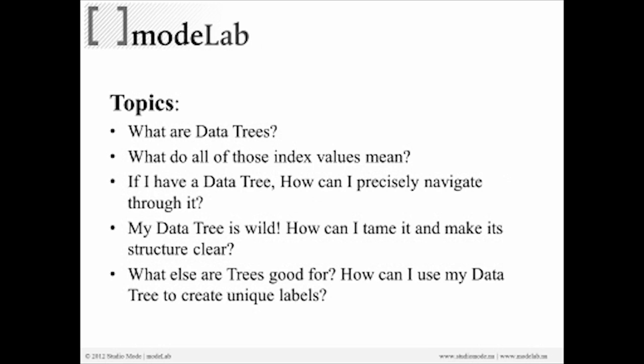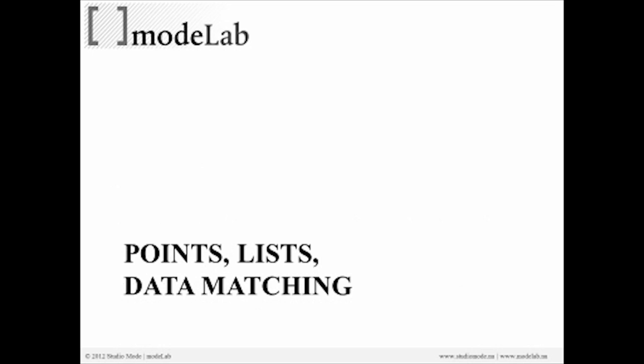The things we're going to go over today are: what are data trees, what are all of the index values that go into a data tree, how can you precisely navigate through it, how might we tame a wild data tree and make its structure clear, and what else are data trees good for — such as how you can use them to create unique labels. We're going to use points today as a way to review all of the content related to data trees, because they're simple and an easy way to describe how something is structured relative to a position in space.